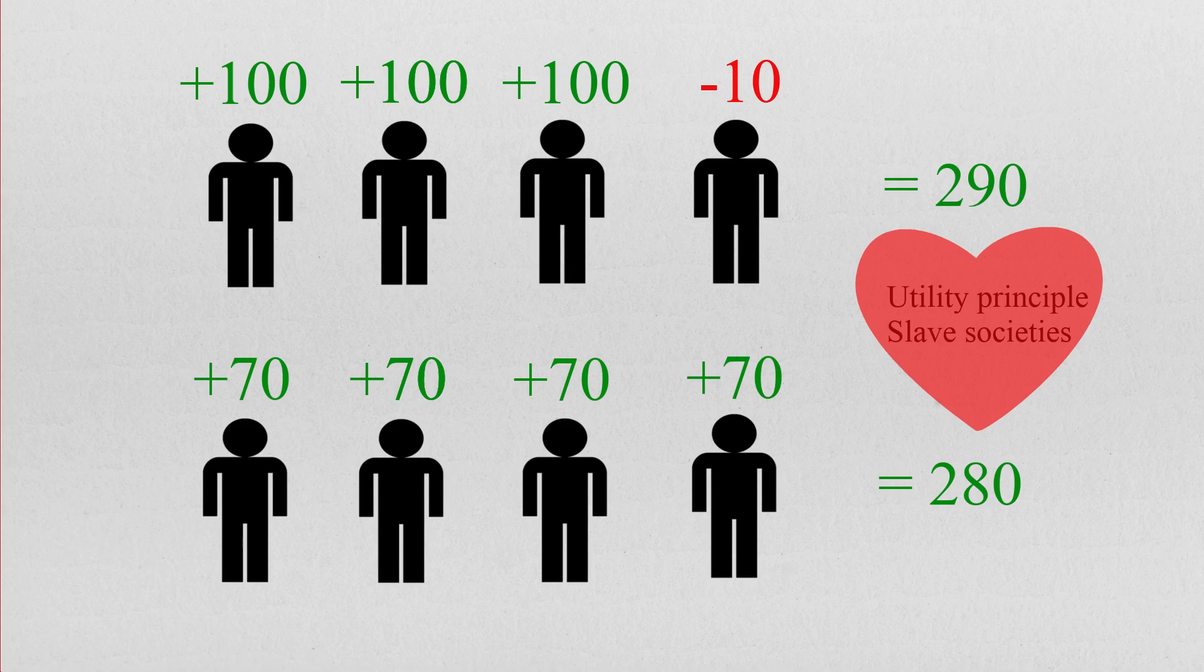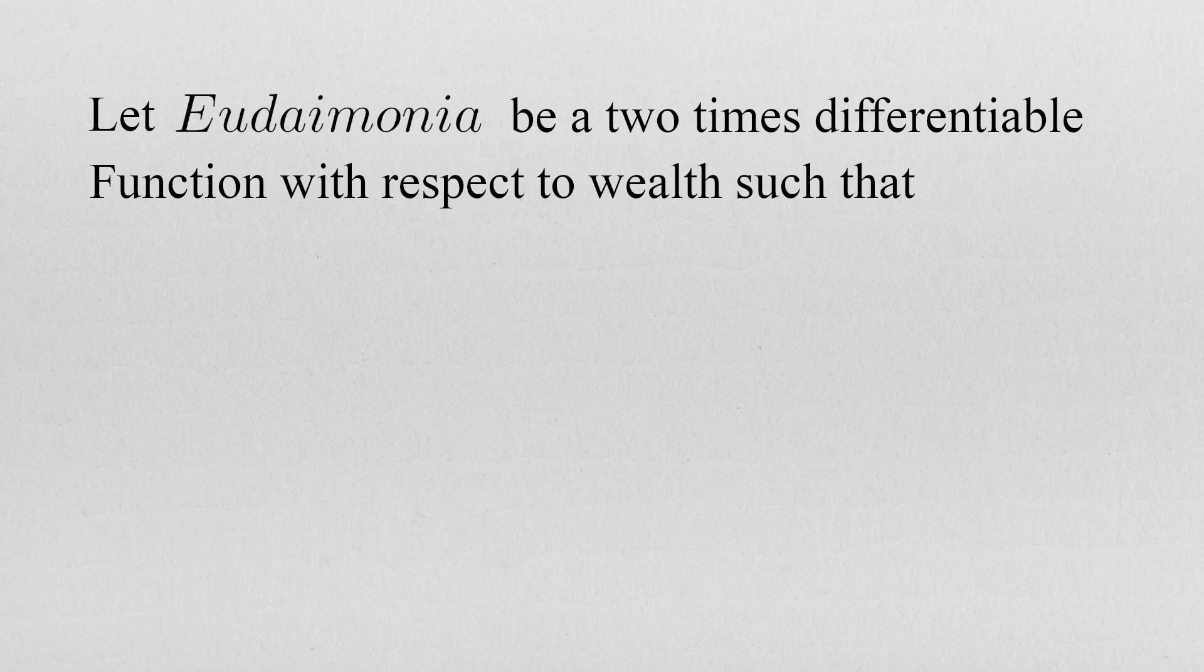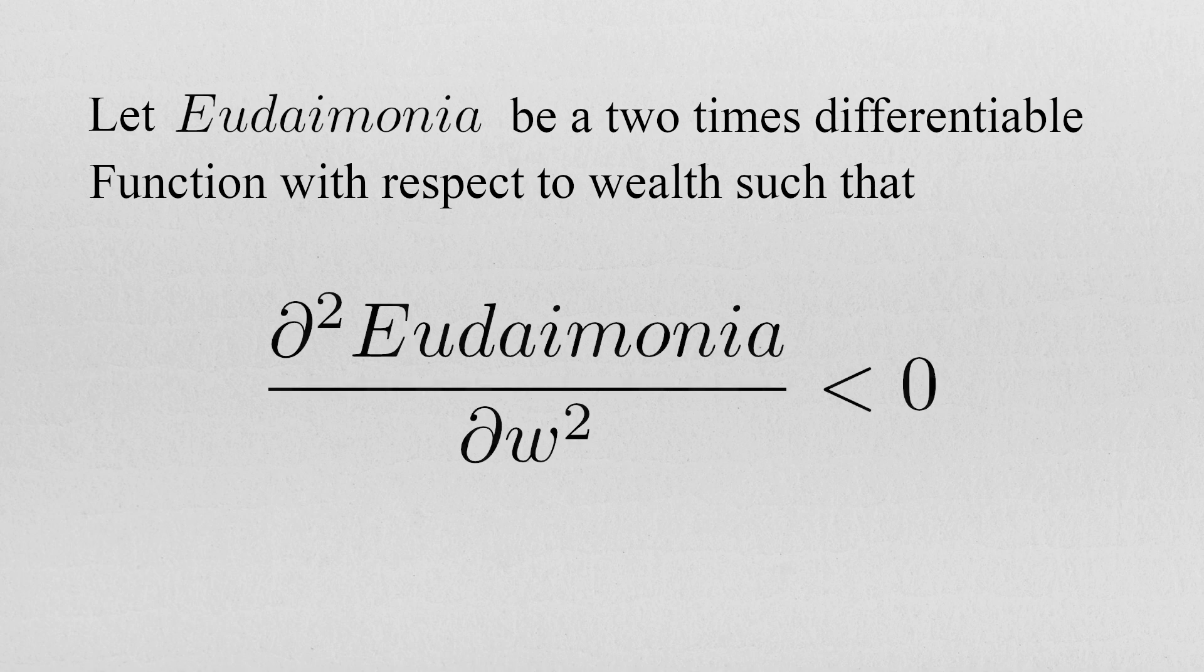So how could we get rid of these objections entirely? If one is really scared of cases of utmost material imbalance occurring, there is a way to banish them for good while retaining the essence of the utilitarian theory, and that is by defining eudaimonia as having negative second partial derivative with respect to wealth.